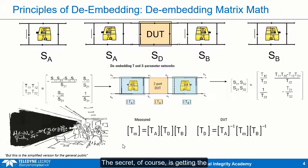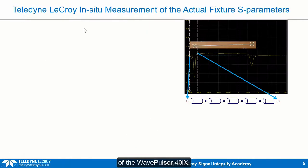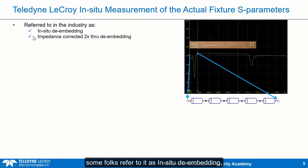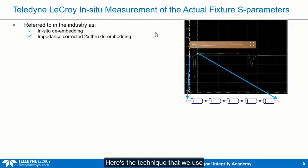The secret, of course, is getting the S-parameters for the fixture on the left and the fixture on the right, and that's where we take advantage of a really cool feature built into the deep toolbox of the WavePulsar 40IX. LaCroix pioneered this technique more than 10 years ago in our early Spark product, and it has since been adopted in the industry under a couple of different names. Some folks refer to it as in-situ de-embedding; the IEEE P370 Standards Committee refers to it as impedance-corrected 2x-through de-embedding. Both of these refer to exactly the same thing.